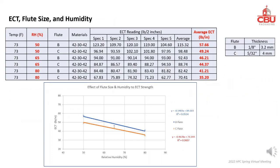Flute size affects ECT strength. This slide shows ECT strength of B and C flutes at different relative humidity levels. As before, the higher the humidity, the lower the ECT strength. The blue line is for B flute and the red for C flute. In this comparison, the C flute is weaker than the B flute, even though the B flute is thinner than the C flute — 3.2 millimeters versus 4 millimeters. This will be explained in the next slide.